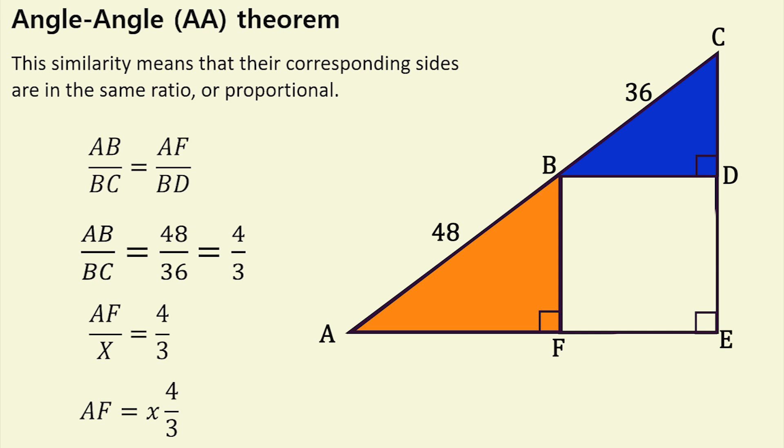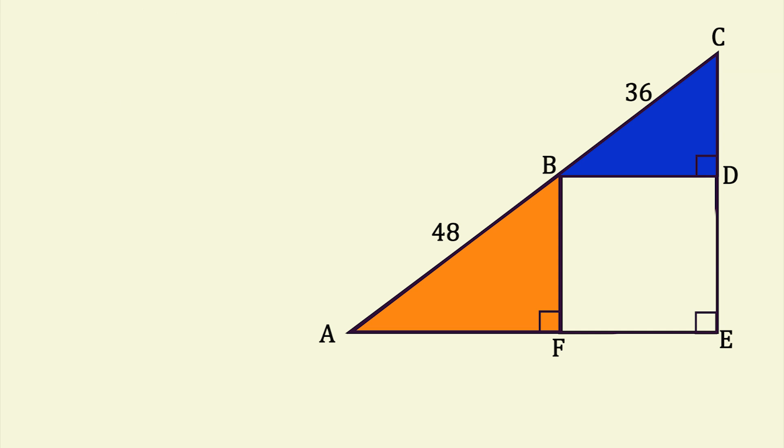Now, let's focus on the orange triangle. We can use the Pythagorean theorem to solve for X. Here, A and B are the opposite and adjacent sides to the right angle, and C is the hypotenuse. Let's replace these with our values.